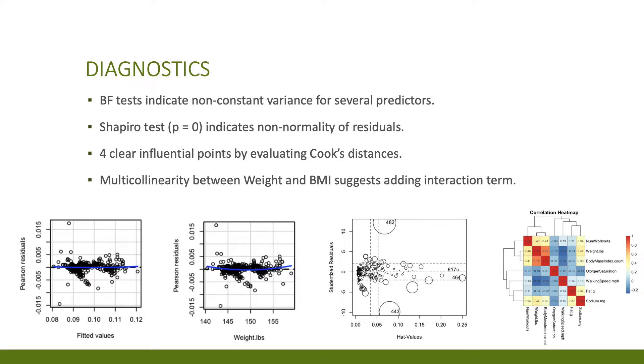After obtaining this final model, I performed diagnostics which included checking for constant variance, normality of residuals, influential points, and multi-collinearity. Many of the residual plots and Shapiro tests indicated non-constant variance and non-normality of residuals. There were also four influential points by considering Cook's distances, and multi-collinearity definitely seems to exist between weight and BMI as we can see in this heat map.